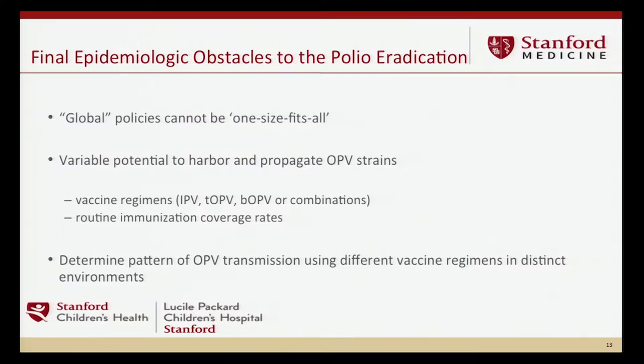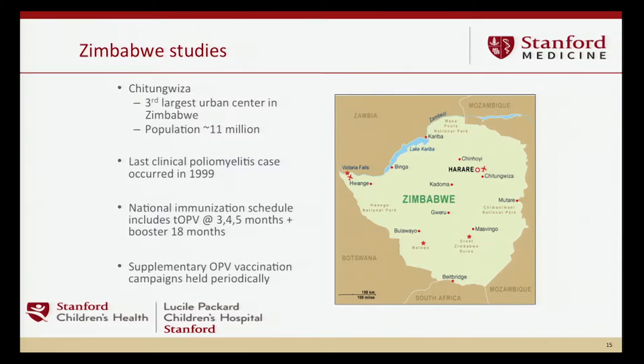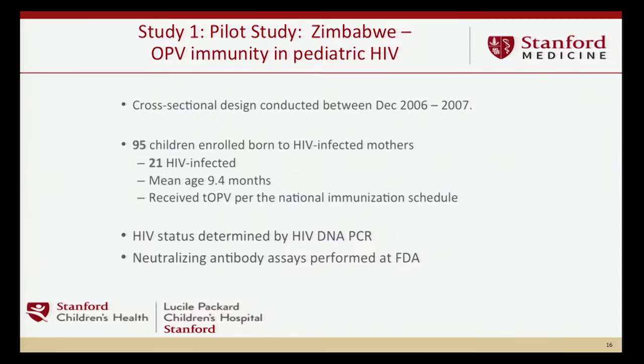What we're looking at in my lab is patterns of OPV transmission using different vaccine regimens and different types of populations to understand the risk. We'll start with Zimbabwe, where I've been working for over 15 years. We have a site about 20 kilometers outside of the capital with national immunization campaigns and supplementary OPV vaccination programs. The last wild-type case was in 1999. The first was a small cross-sectional study to understand OPV immunity in pediatric HIV-infected patients, since HIV in children induces B-cell dysfunction.